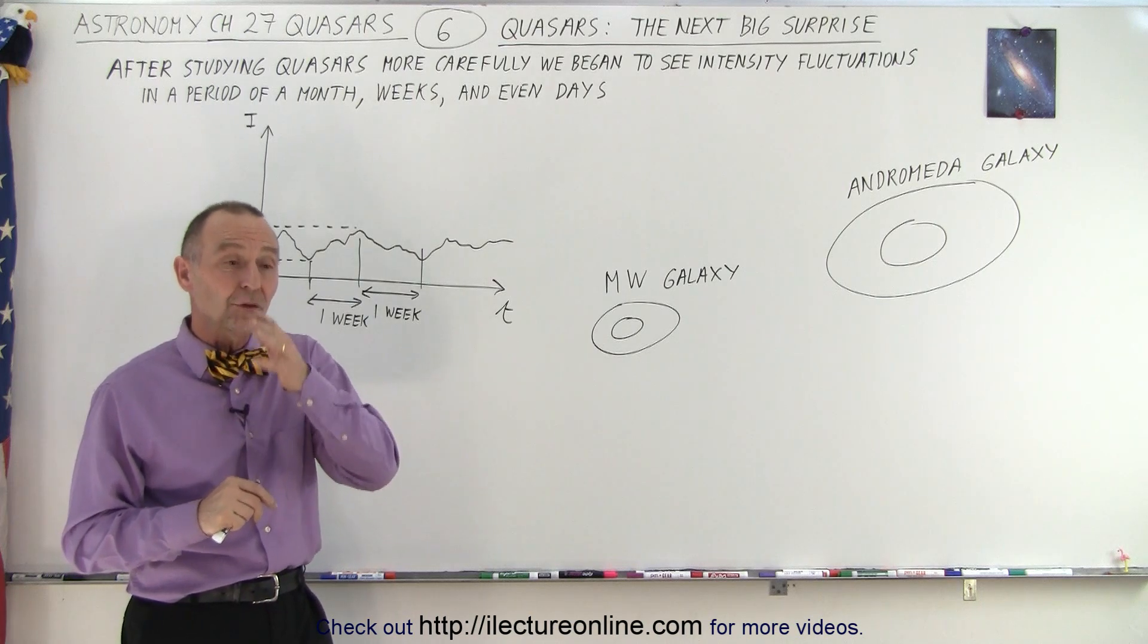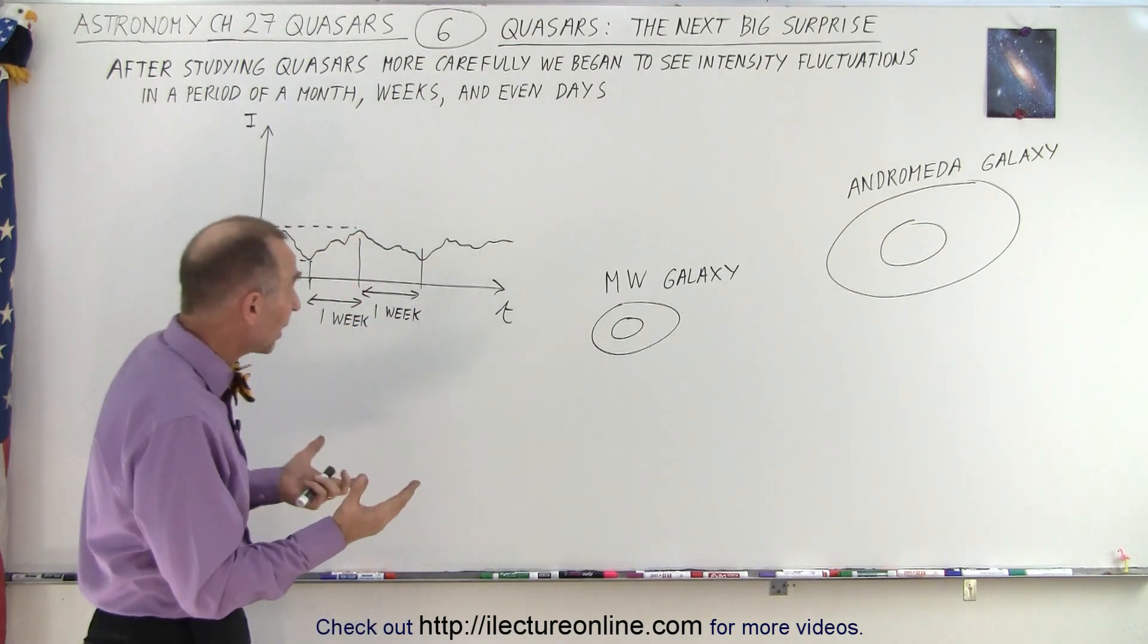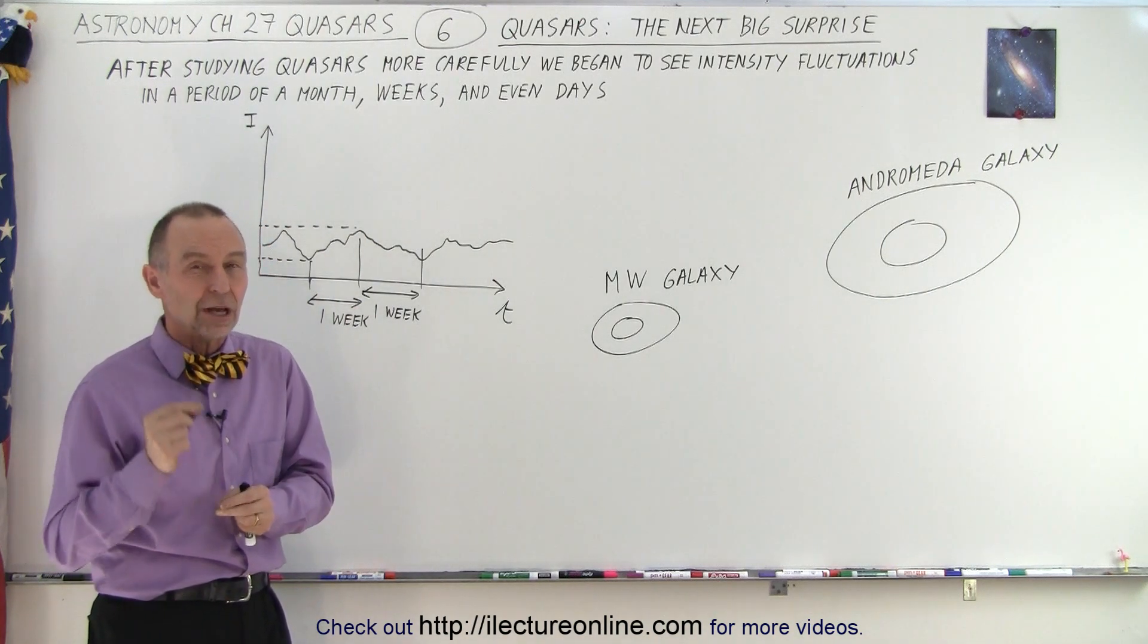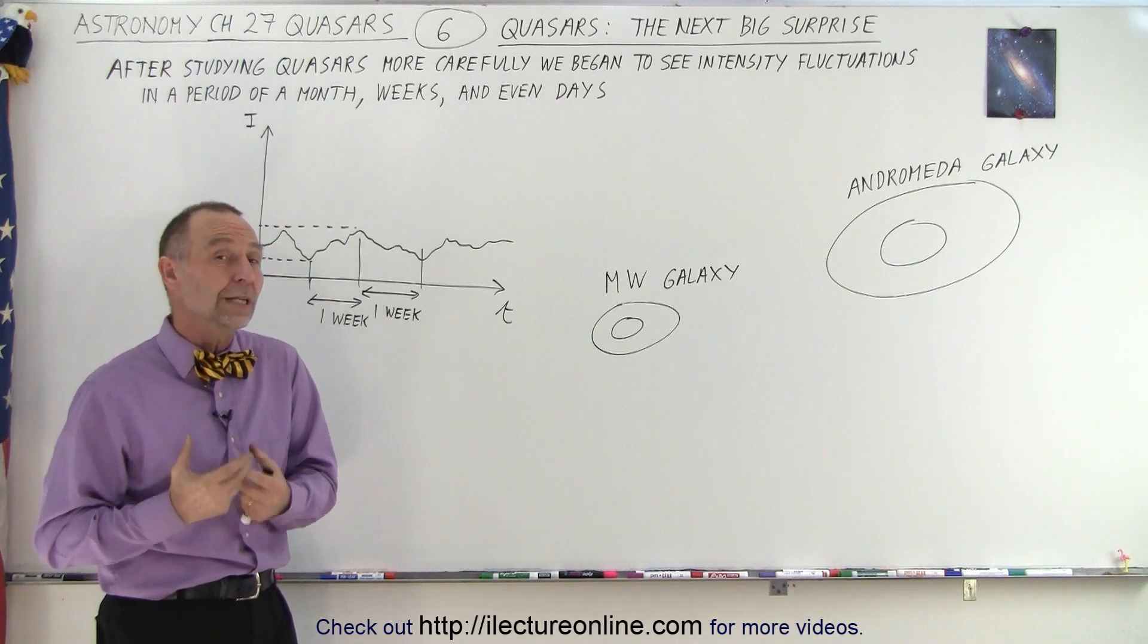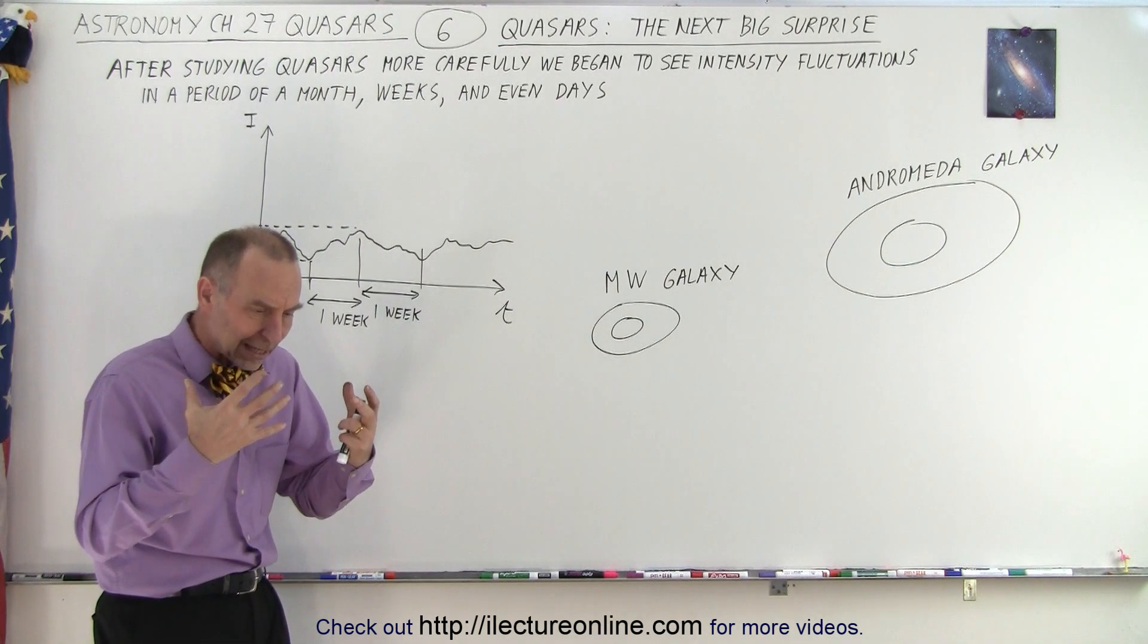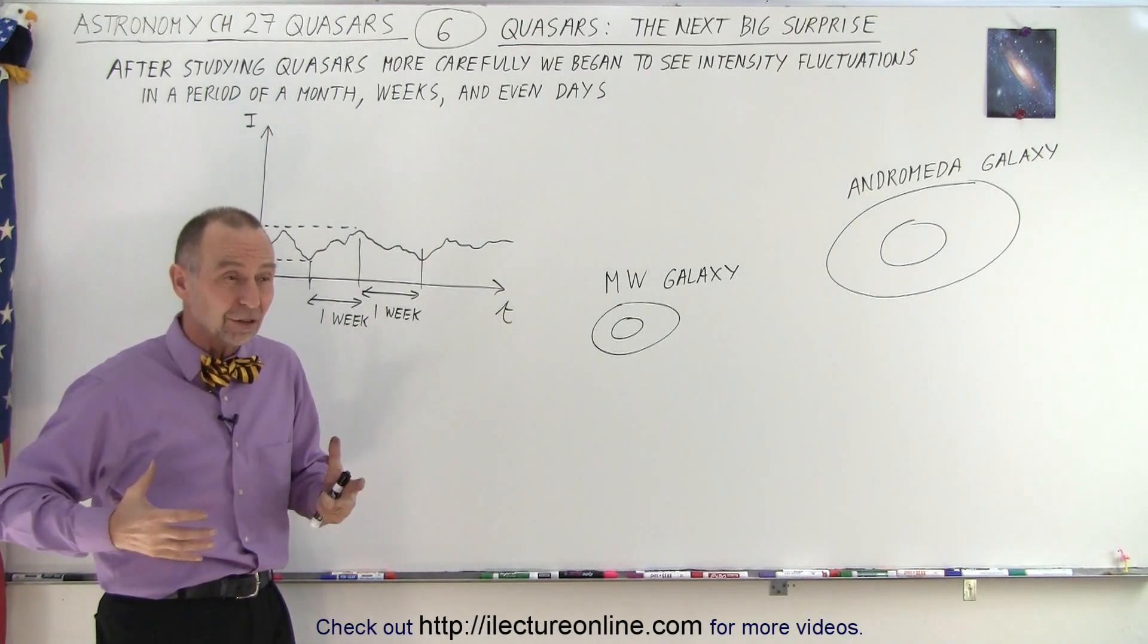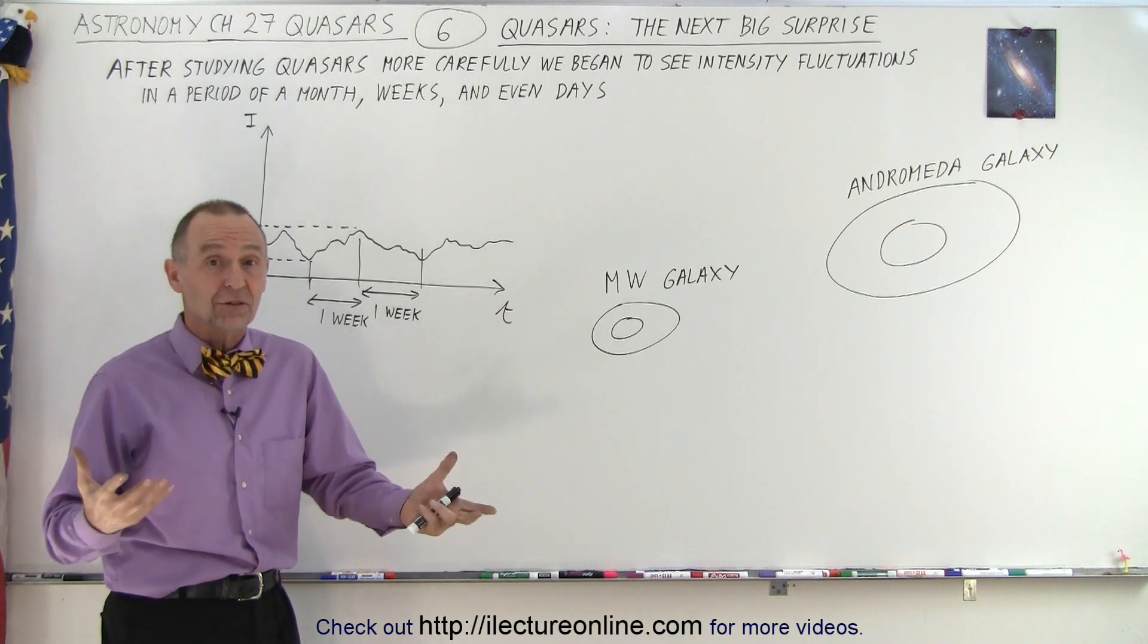And then we began to see that those intensities were fluctuating, and those were fluctuating over periods of months, weeks, and even days. Now here we need to carefully take a look at that to understand what that really means. So here we're thinking that the energy from that quasar is coming from the entire galaxy, very active galaxy. So that's where the term active galaxy is coming from.